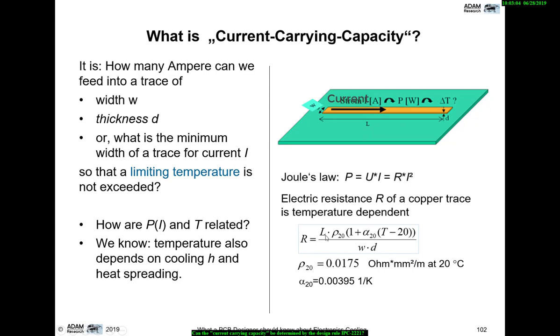The resistance is a term like this. The longer the trace, the higher the resistance and the smaller the cross section, the higher the resistance. And we have to multiply this geometric part with some material part, which is the specific electric resistance or resistivity of copper measured at 20 degrees C. This is a value of 0.0175 ohm mm² per meter, which means that we have to enter the length in meter and the cross section in square millimeters, multiplied by some temperature dependent correction, which I would like to neglect in this session.